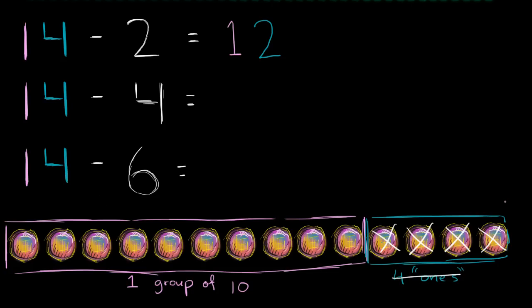Well, I still have my 1 group of 10, and I have 0 ones left over. I have no ones anymore. And so 14 minus 4 is 10. And that makes sense. 14 is 10 plus 4, and now we're subtracting 4 to get 10.